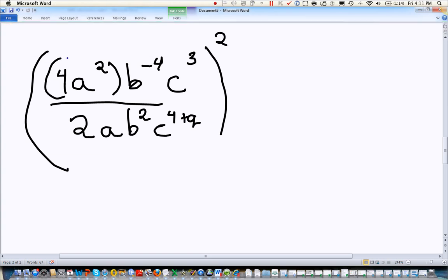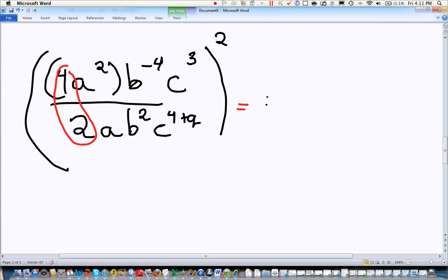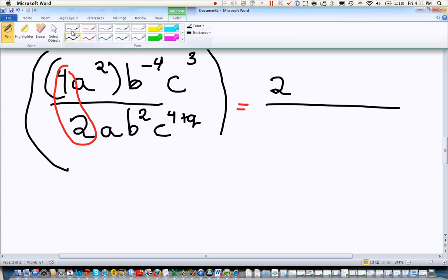So I'm going to look at my numbers first. I have a 4 on top and a 2 on the bottom. And I'm going to think to myself, okay, how does that simplify? And a 4 over 2 is really a 4 divided by 2, which leaves me a 2 on the top. And so I've dealt with the numeric part of this.